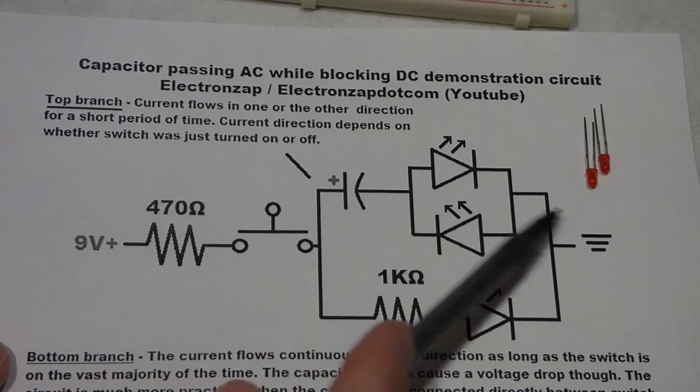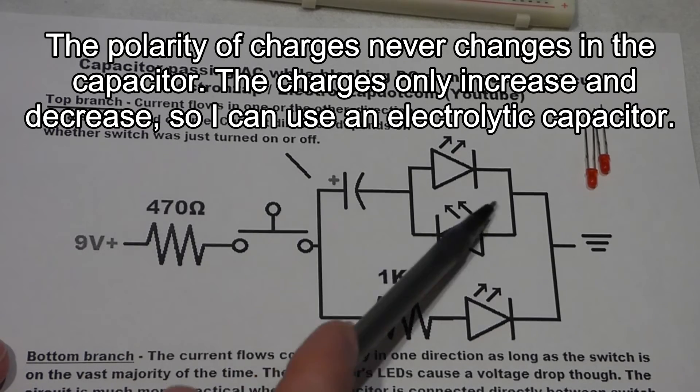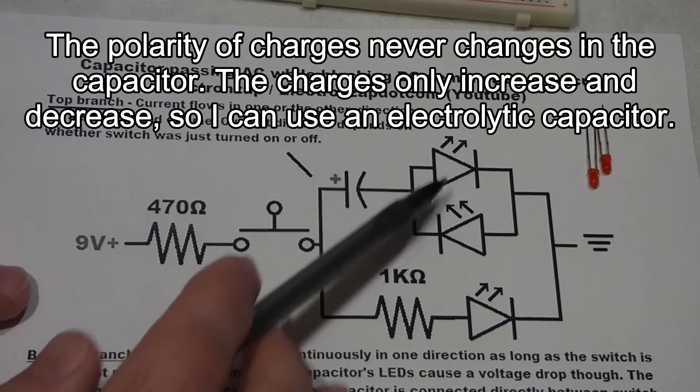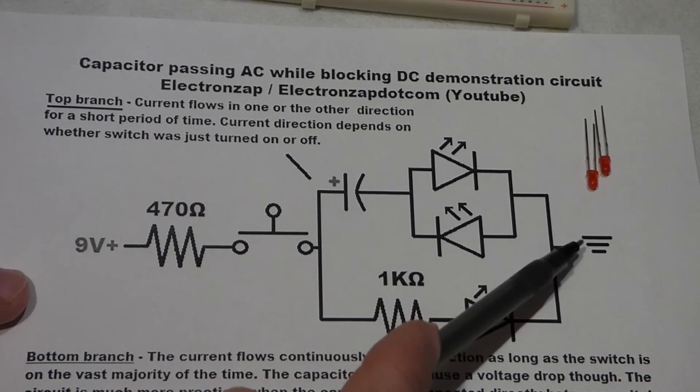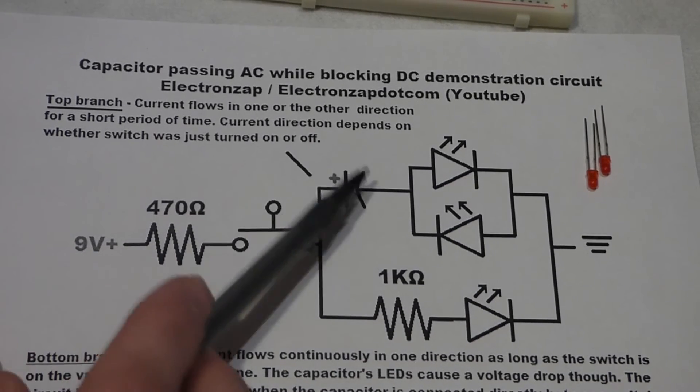So you saw this part of the circuit that depends on the capacitor conducting was alternating. The LEDs are backwards from each other, so one turns on when it conducts one way, and then the other one turns on when it conducts the other way.